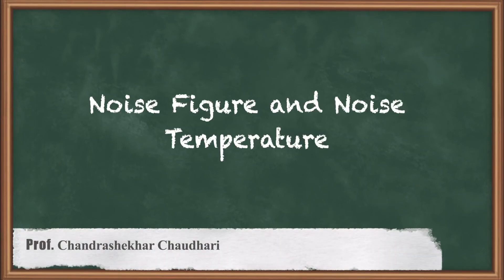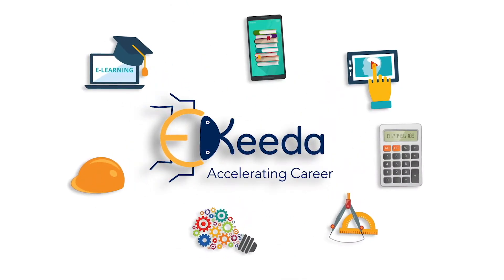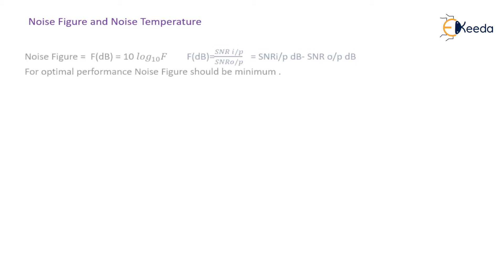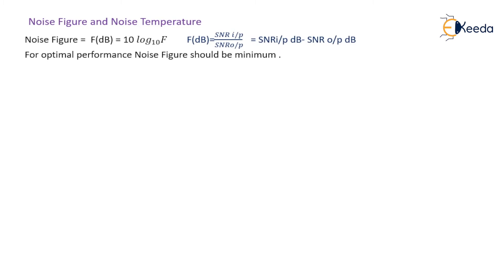Hello friends. Now we will see how the noise figure and the noise temperature can be calculated. Noise figure, denoted F in dB, is equal to 10 log base 10 of F, where F is the noise factor. When the noise factor is expressed in terms of dB, it is called noise figure.